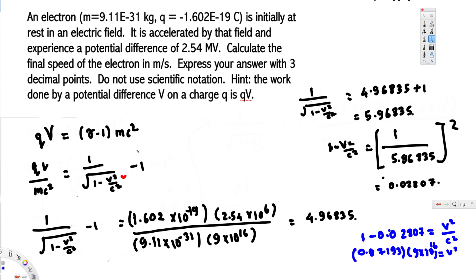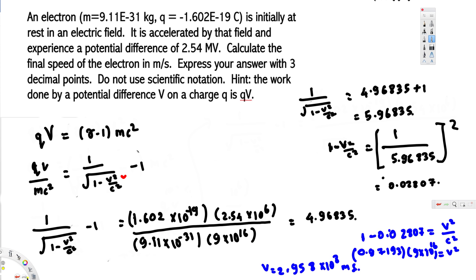To find v, we take the square root of both sides. This gives us 2.958 times 10 to the power of 8 meters per second. To three decimal places, this is our final answer — 2.958 times 10 to the power of 8 meters per second. I hope this helps, thanks for watching.